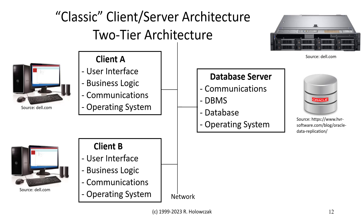Here, tier means two levels. In this architecture, we have a database server that is running a copy of the DBMS and also has our data stored in the database. Examples of this might be Oracle, Microsoft SQL Server, IBM's DB2, or perhaps even PostgreSQL.